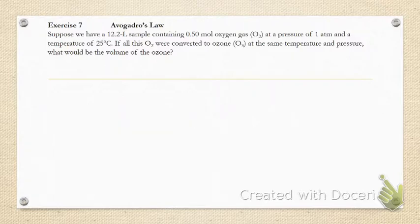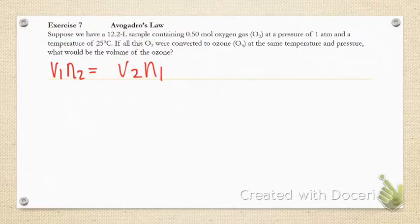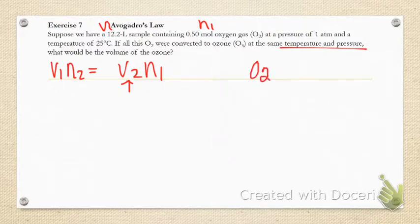Remember that is V1N2 equals V2N1. We have a 12.2 liter container, that's V1. 0.5 moles of oxygen, that's N1. Pressure of one atmosphere and temperature of 25 degrees. If all the O2 were converted to ozone at the same temperature and pressure, what would the volume be? We're solving for V2. We have N1, we don't have N2 yet but we can get to it because it's telling us O2 is being converted to ozone which is O3.